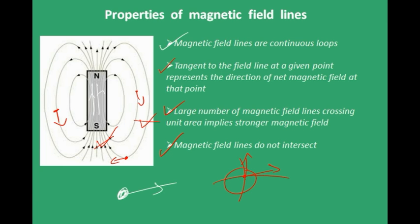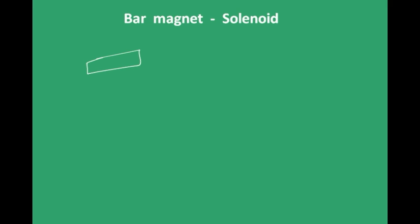To draw field lines, you can sprinkle iron filings or place a magnetic compass at various locations near the bar magnet. The compass needle points in the direction of the field at each location, and when you join all these directions you finally obtain the magnetic field lines.